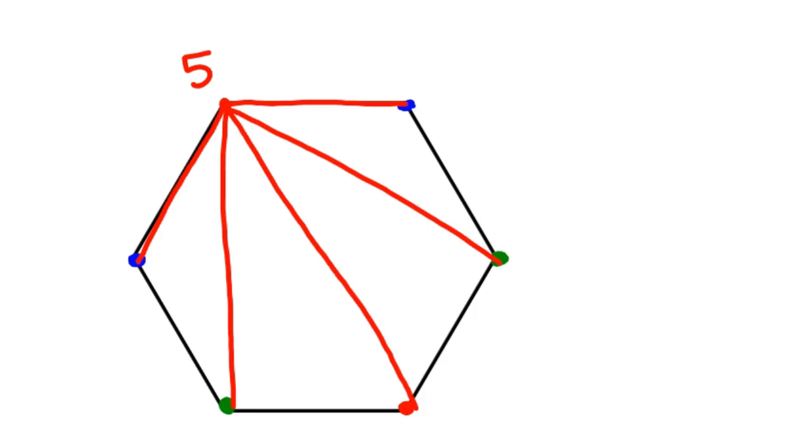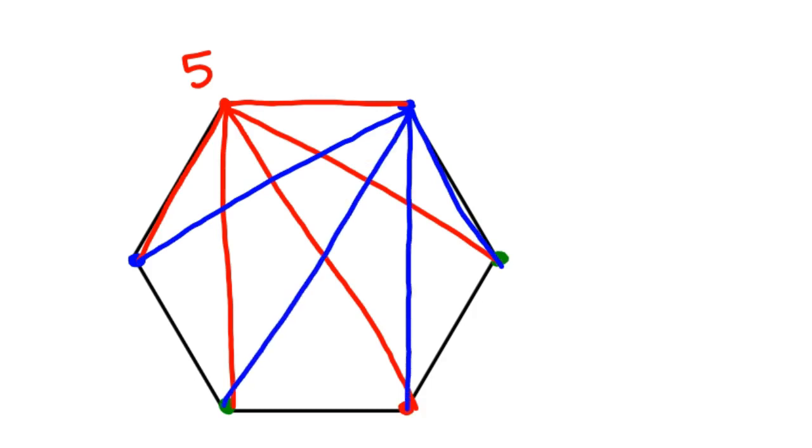Then the blue person here right beside him, well, he's already shaken hands with that red person adjacent to him. So then he shakes hands like this. And so he only has four handshakes. And then the green person, he's already shaken hands with two people. So now he's going to just go to the blue person, the other green person, and the red person. So he's had three handshakes.